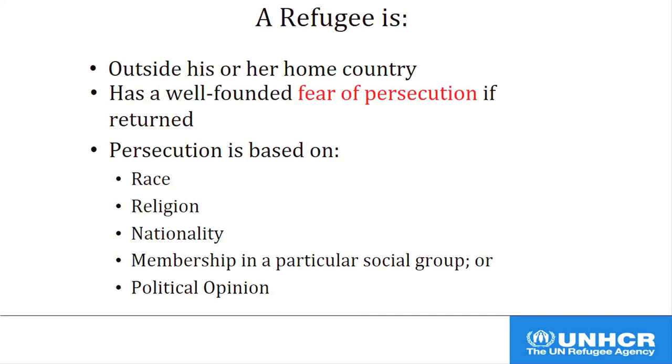Those five grounds are: race, religion, nationality — which is usually interpreted to mean ethnicity — political opinion, or membership in a particular social group. This last category is sometimes considered a catch-all that can mean a number of different things. Refugee status isn't for persons who are solely fleeing war or generalized violence, although that's a factor in many refugee-producing situations. Instead, they have to have a fear of persecution. They don't have to actually have fled persecution — the definition is forward-looking. It relates to what the person fears will happen if returned home. Many refugees have already experienced persecution, or seen family or friends persecuted, but a reasonable fear is all that's required.